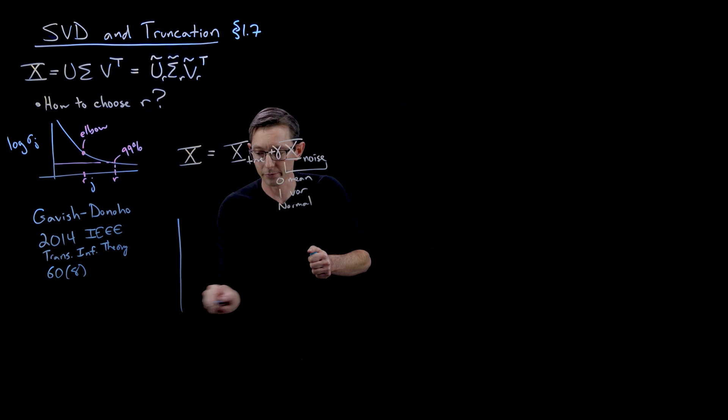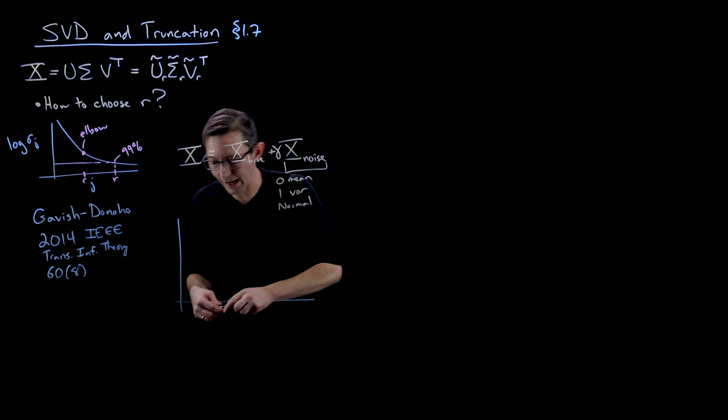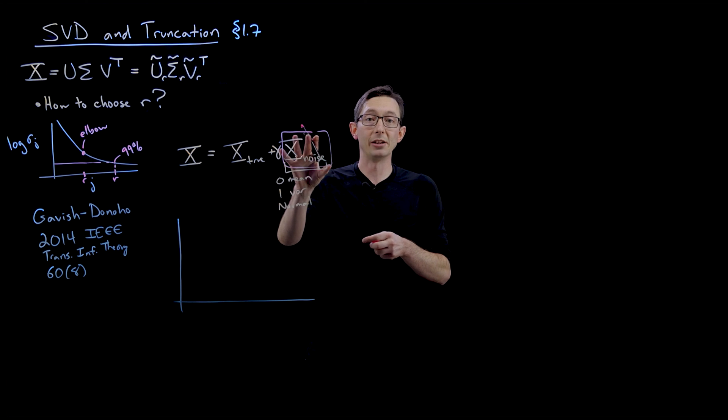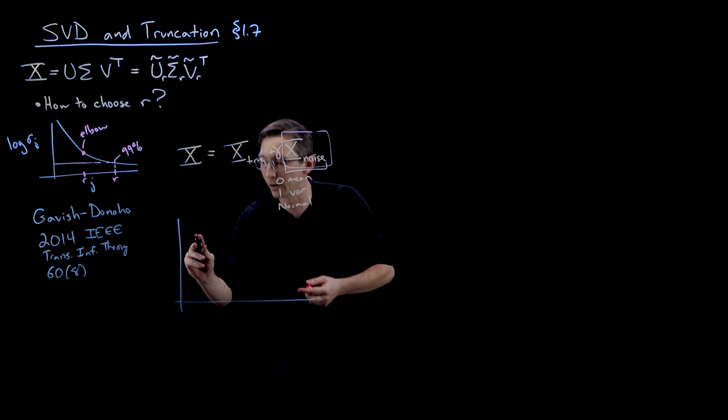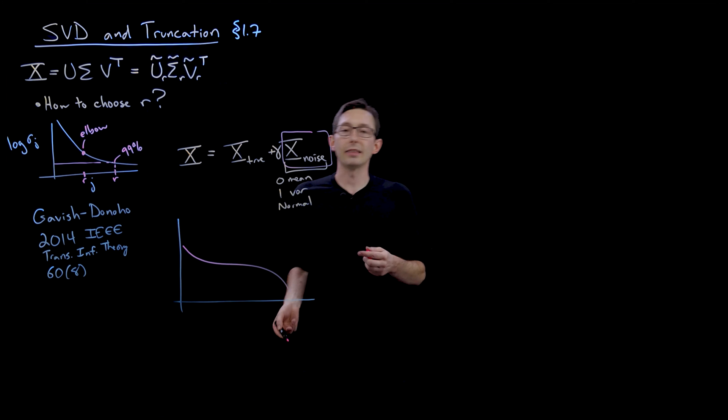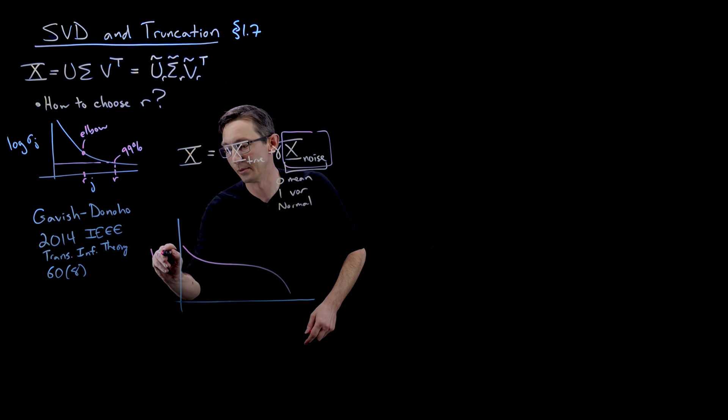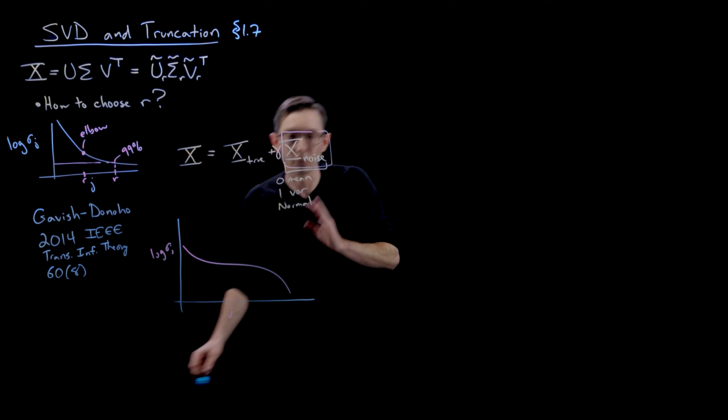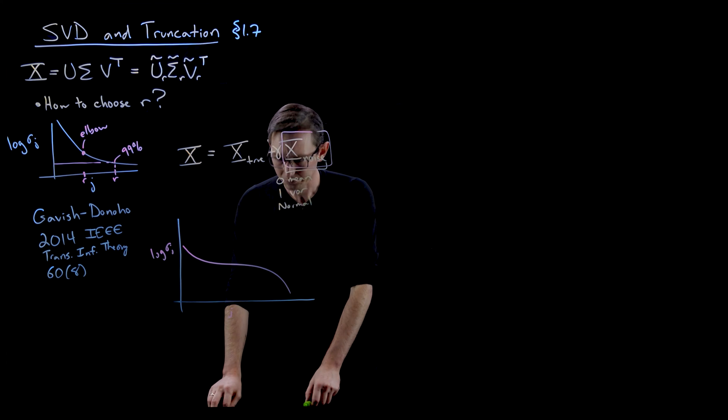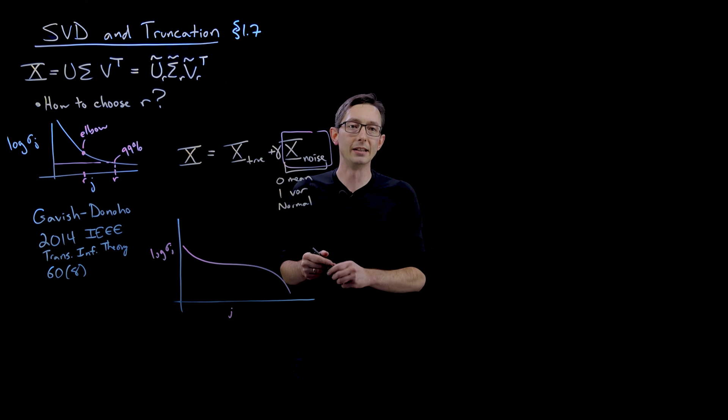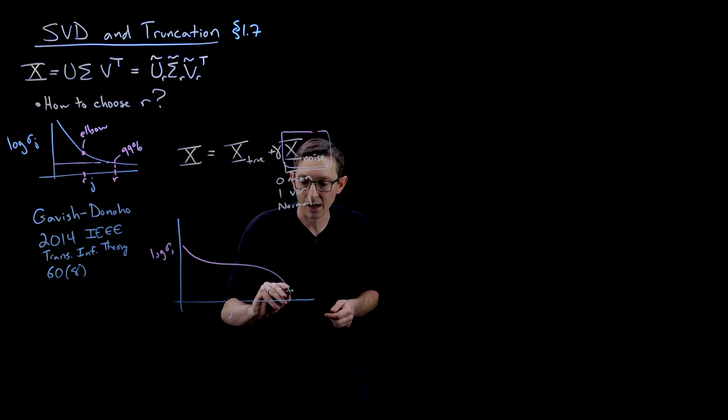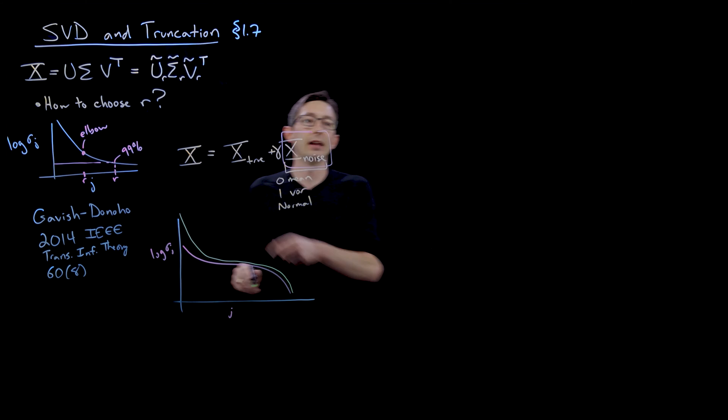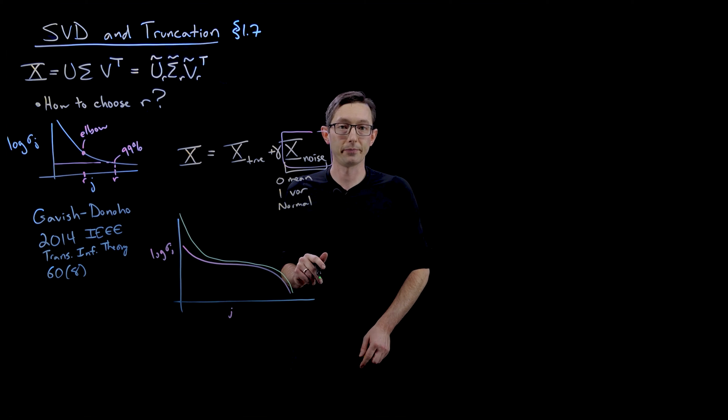I'm going to draw some pictures here. If we actually can compute analytically what the SVD of a noise matrix would look like. The SVD of a noise matrix looks kind of like that. This is the log sigma versus j. And what Gavish and Donoho realized was that lots and lots of data, if you take its SVD, actually looks a lot like this. It looks like this. And then at some point it deviates in the large singular values.